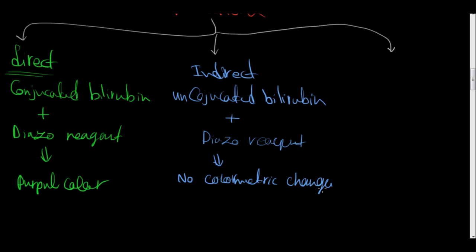That's because the unconjugated bilirubin or the free bilirubin is attached to plasma protein, to the albumin. We must first break the bond between the unconjugated free bilirubin and the plasma proteins to give the purple color reaction.